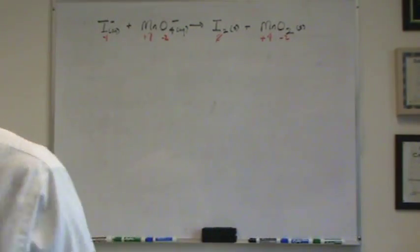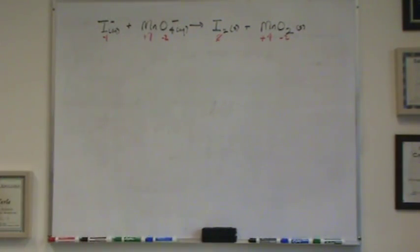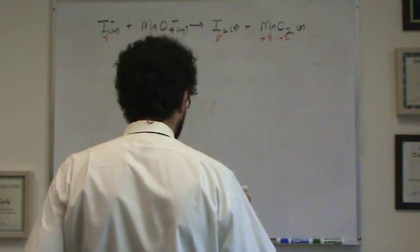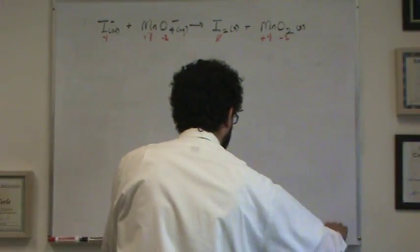So since charges change, we're going to use the half reactions. We have to use the redox method of balancing here. Let's write these out.